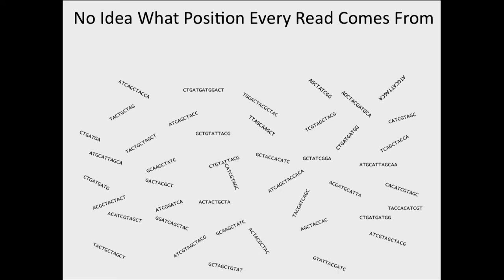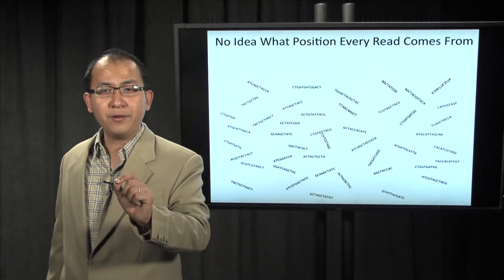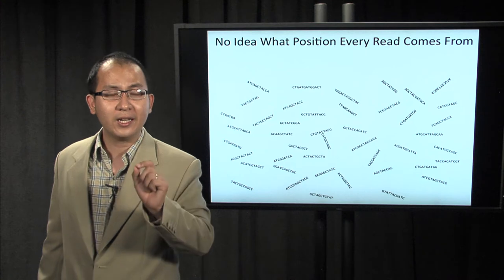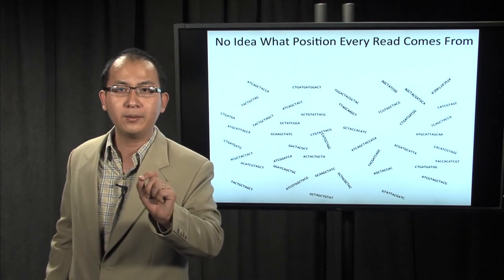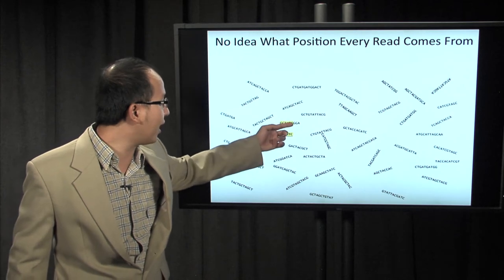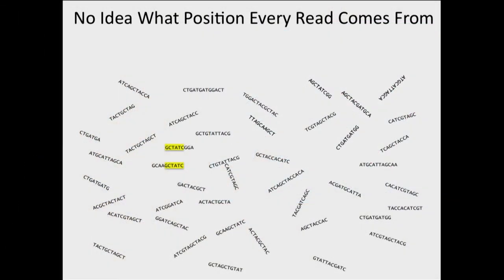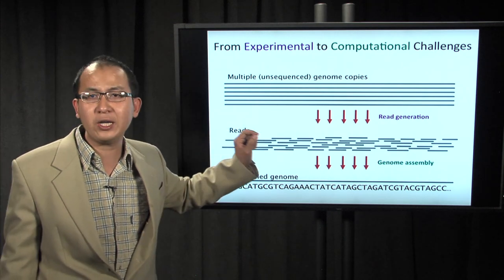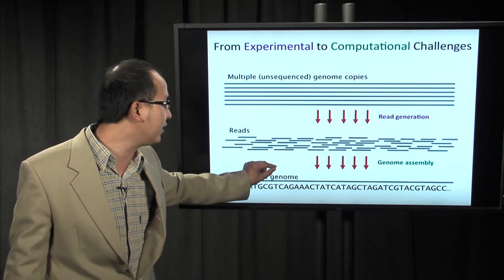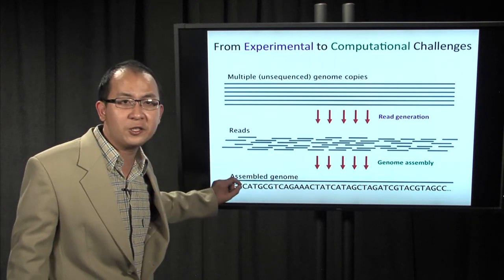Remember, no position information is known. A way to solve this puzzle is to apply the same intuition as the newspaper explosion puzzle: use the overlapping information. If you see two reads that have overlapping fragments, you reconcile these two pieces into a single piece and move further. This is the overall picture of genome sequencing and assembly — you have multiple copies of the genome, the sequencing machine generates reads, and the task of genome assembly is to reconstruct the original genome from those reads.